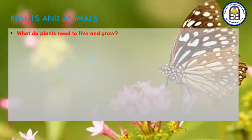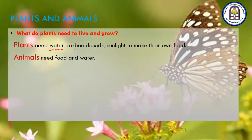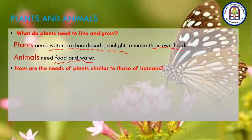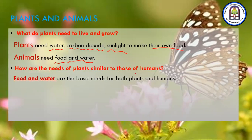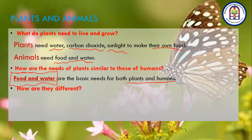What do plants need to live and grow? Plants need water, carbon dioxide, and sunlight to make their own food. What do animals need to live and grow? Animals need food and water. How are the needs of plants similar to those of humans? Both animals, humans, and plants need food and water — food and water are the basic needs for both plants and humans.